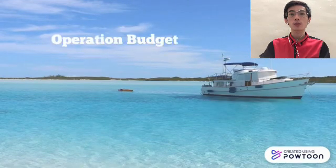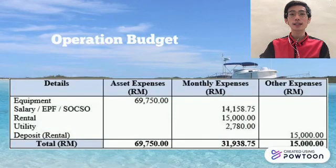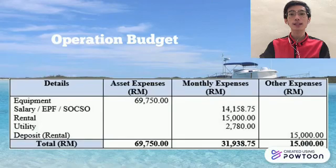The operation budget includes equipment, operation employees' salary, EPF, SOCSO, rental fee, utility, and deposit. We divided it into three parts: asset expenses, monthly expenses, and other expenses.